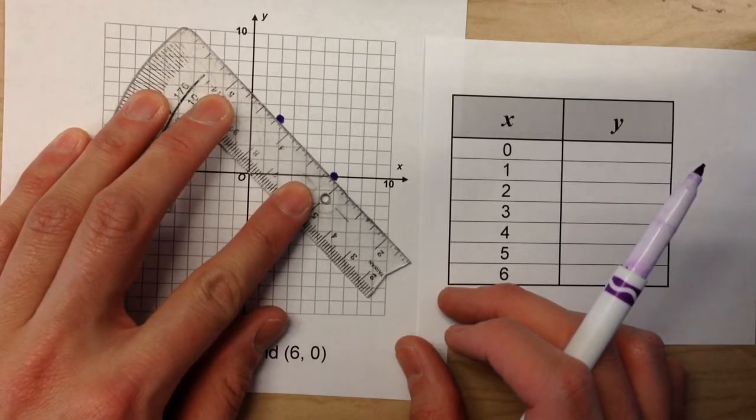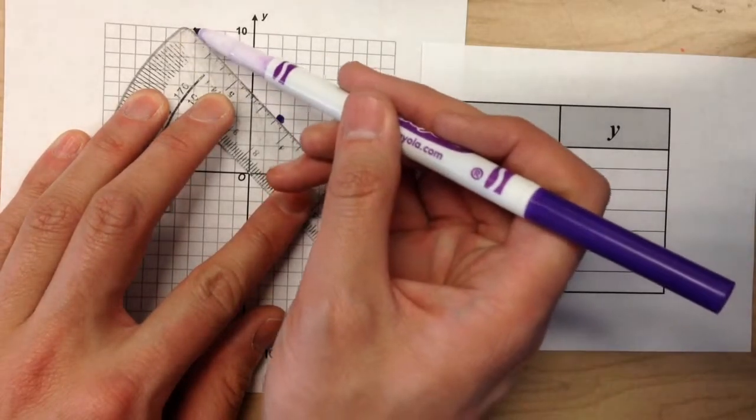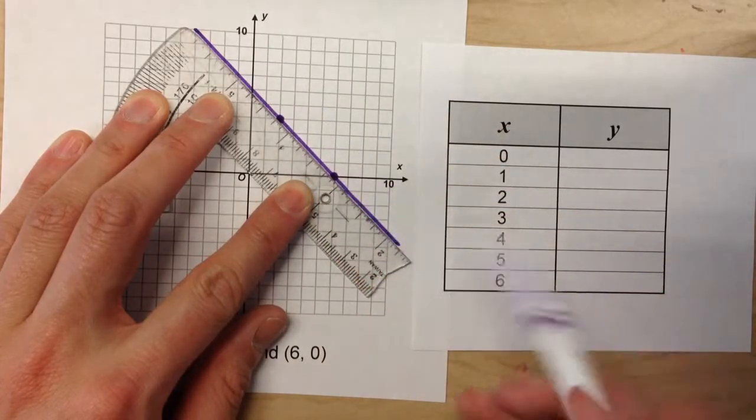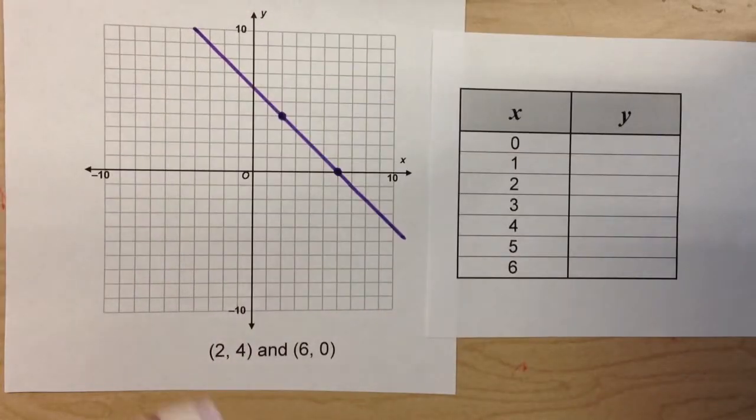Now, it's really important to use a straight edge because if you don't draw the line carefully, you're not going to get an accurate y-intercept.